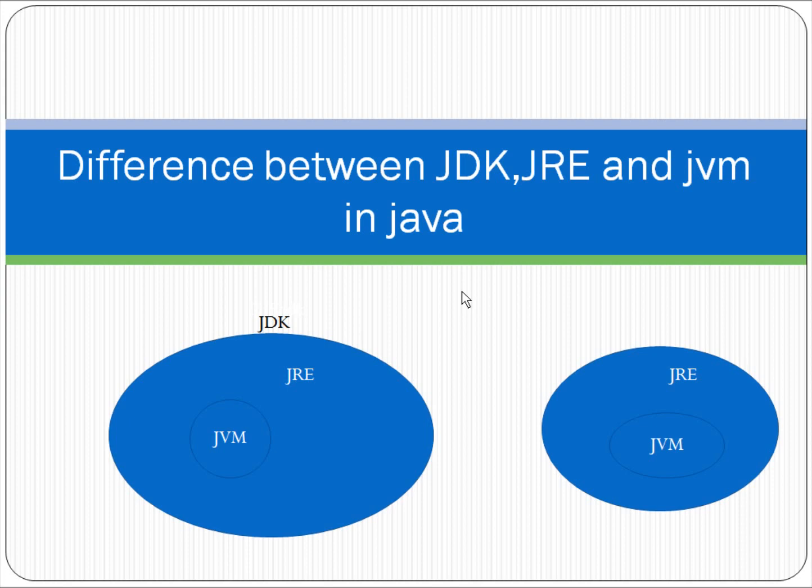But if we install only JRE without JDK, we can only execute Java applications — we cannot compile them. Because JRE has only JVM, we can execute only already-developed applications.